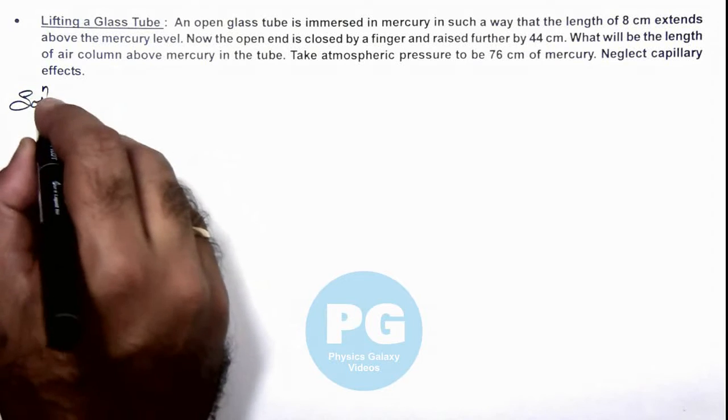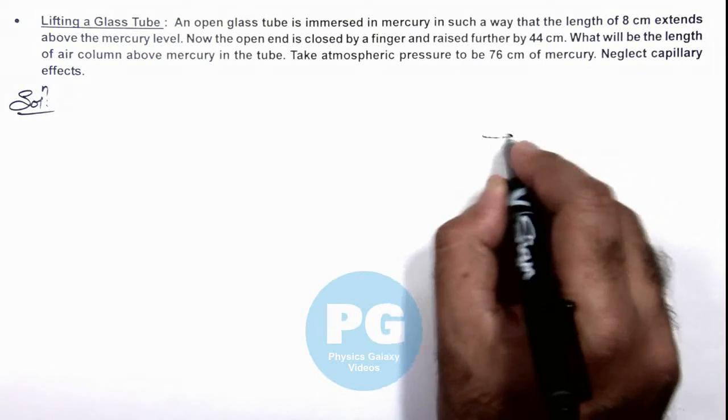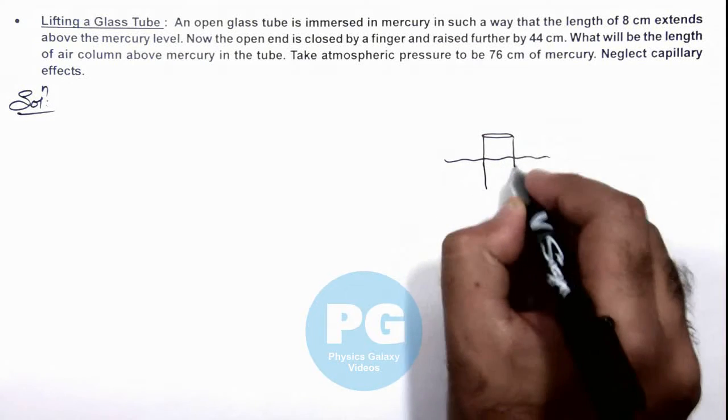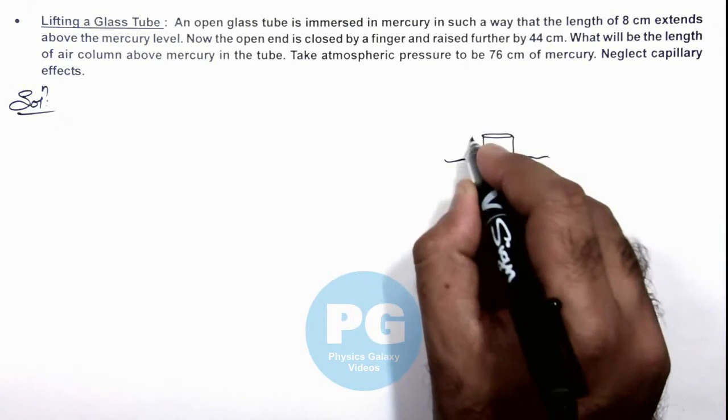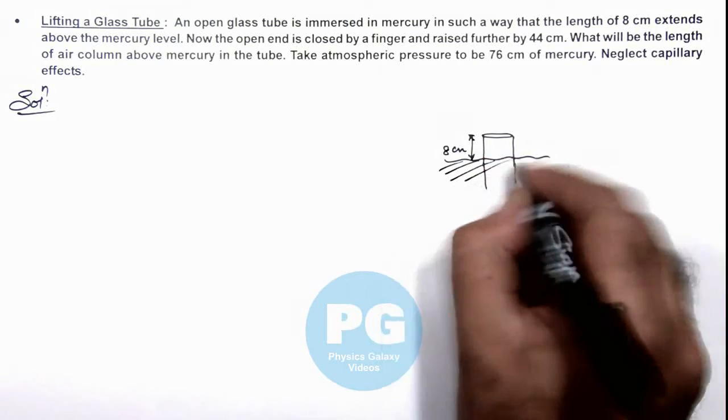Now the situation is like this, I can try to draw the picture. This is the tube, and this is the level of mercury. Initially, the tube is 8 centimeters above the mercury level.